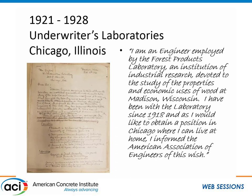Carl then applied to work at the Underwriters Laboratory in Chicago, Illinois. You can see a handwritten letter that he had in his boxes of documents. He prepared all his letters and official documents by hand first, then typed them when he had them just the way he wanted. In this letter, he's writing to the Underwriters Laboratory saying he's an engineer currently employed at the Forest Products Laboratory, asking for a job because he wants to move closer to his family.